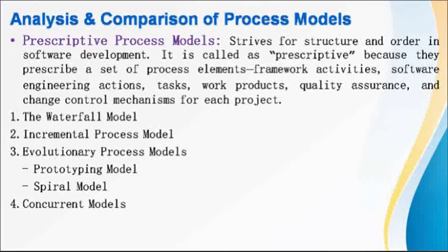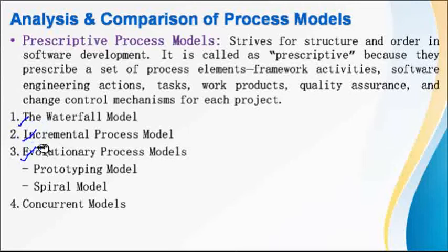Based on process flow, we will study some models. The first category is prescriptive process models. These strive for structure and order in software development. They are called prescriptive because they prescribe a set of process elements — framework activities, software engineering actions, tasks, work products, quality assurance, and change control mechanisms — for each project. Models in this category include the waterfall model, incremental process model, evolutionary process model (with prototyping and spiral sub-models), and concurrent models.